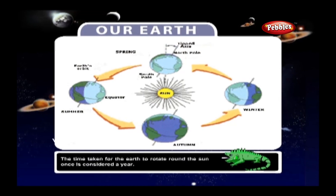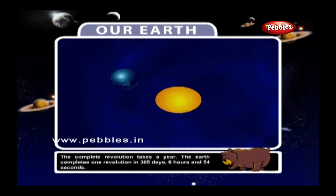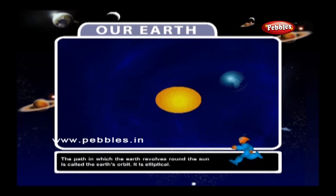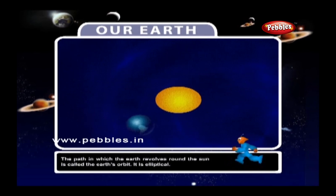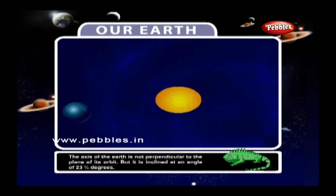The time taken for the Earth to go round the Sun once is considered a year. The Earth completes one revolution in 365 days, 6 hours and 54 seconds. The path in which the Earth revolves around the Sun is called the Earth's orbit. It is elliptical. The axis of the Earth is not perpendicular to the plane of its orbit, but inclined at an angle of 23.5 degrees.